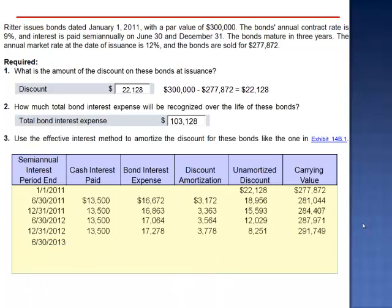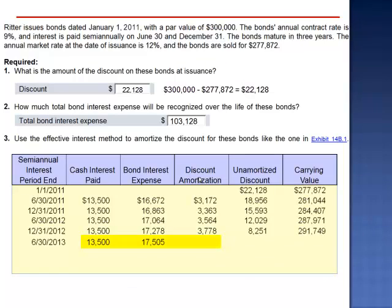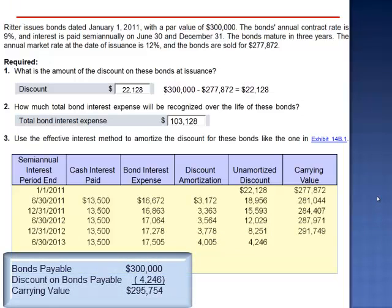At the end of period 5, cash interest paid is $13,500. Bond interest expense is the $291,749 carrying value multiplied by 6%, the semi-annual market rate. $291,749 multiplied by 6% is $17,505. The amount of the discount amortization is the difference between $17,505 and $13,500, which is $4,005. We subtract $4,005 from $8,251, dropping the unamortized discount to $4,246. The carrying value increases by $4,005 to $295,754.